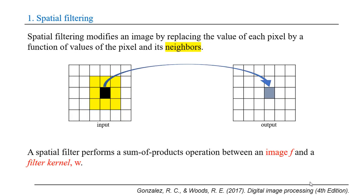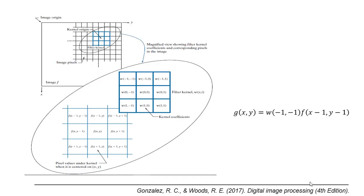Hello everyone, in this video I will talk about spatial filtering. Spatial filtering is the process of modifying an image by replacing the value of each pixel by a function of values of the pixel and its neighbors. In spatial filtering, we perform a sum of products operation between an image and a filter kernel.